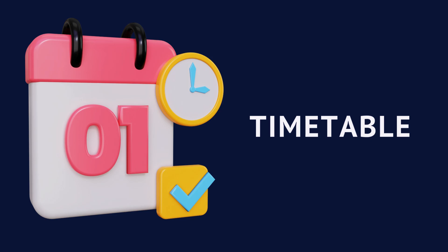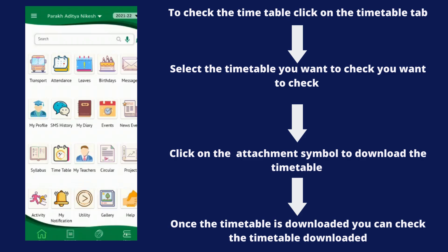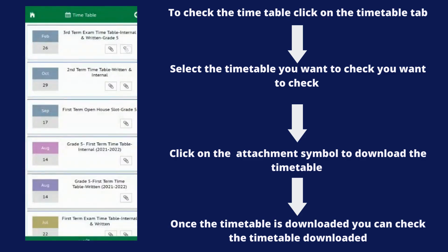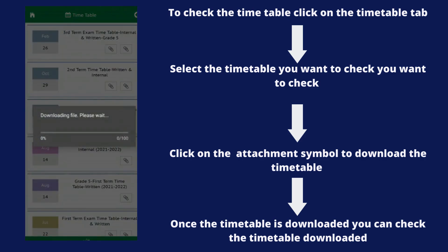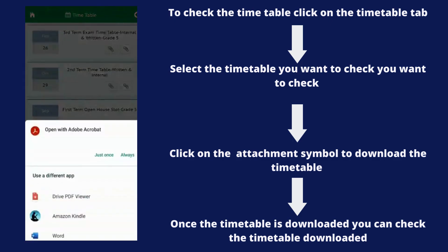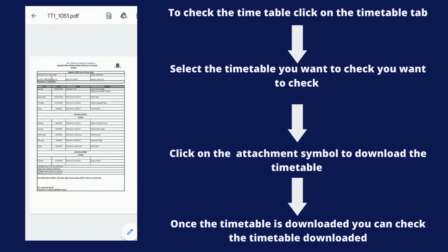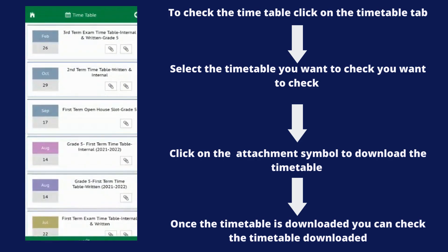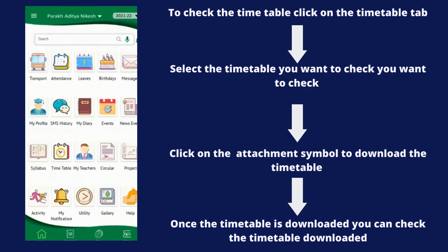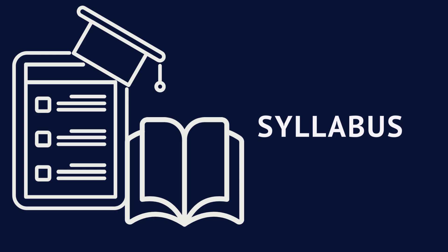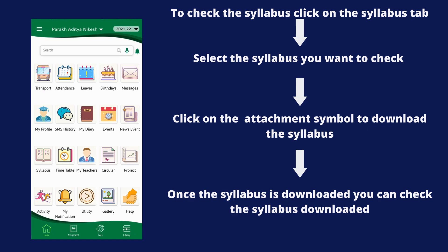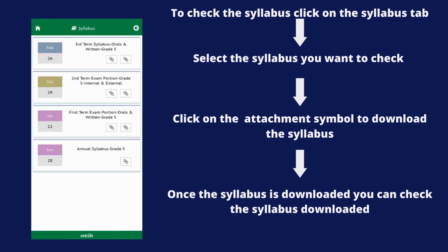Now let's check the Timetable tab. Click on the Timetable tab, then click on the attachment symbol to download the timetable. Once the timetable is downloaded, you can check it at any time.